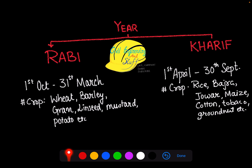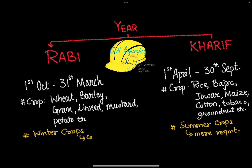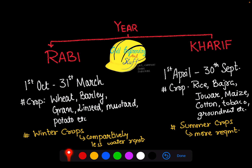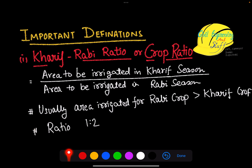The Kharif season consists mostly of summer crops and hence requires more amount of water, while the Rabi season is also called the winter crops and, compared to Kharif season, their recommended water requirement is somewhat lesser. These seasons are applicable for the northern part of India; in the southern part there is no particular differentiation in terms of crop types since the temperature remains the same throughout the year.